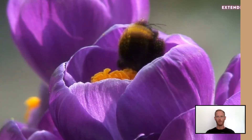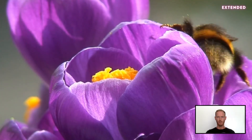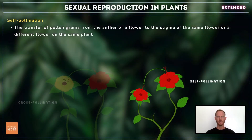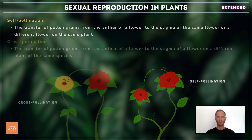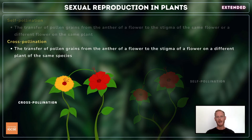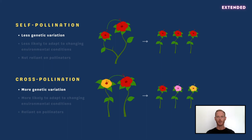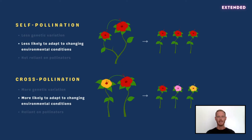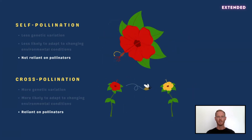Moving on to the extended content, beginning with the terms self-pollination and cross-pollination. Self-pollination is the transfer of pollen grains from the anther of a flower to the stigma of the same flower, or a different flower on the same plant. Cross-pollination is the transfer of pollen grains from the anther of a flower to the stigma of a flower on a different plant of the same species. Self-pollination leads to the production of plants with less genetic diversity, since genetic material from the same plant is used to form gametes. This may limit the ability of offspring to adapt to new or changing environments, reducing chances of survival. In certain situations, however, self-pollination may increase the likelihood that a population survives, as a flower's own pollen falls directly onto its stigma, allowing the plant to produce seed even when pollinators are scarce.